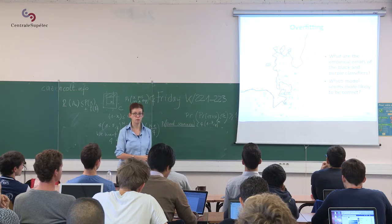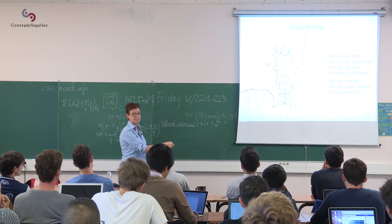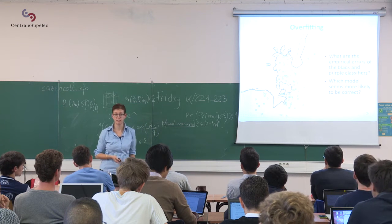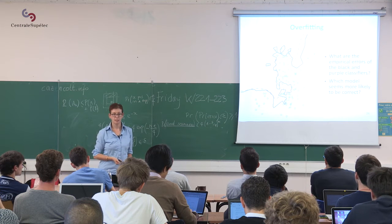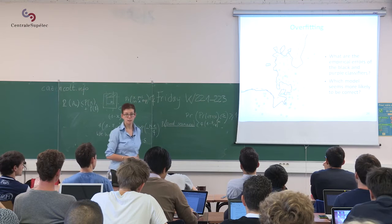I could also decide that I only want to use a line, and then I would draw a line here, and I would make many, many mistakes. In that case, I would barely pay attention to my data and the shape it has, and I would barely fit to it, so we would call that underfitting.